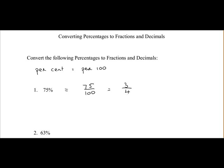If you're converting it to a decimal, you simply divide by 100. So 75 divided by 100 is equal to 0.75.